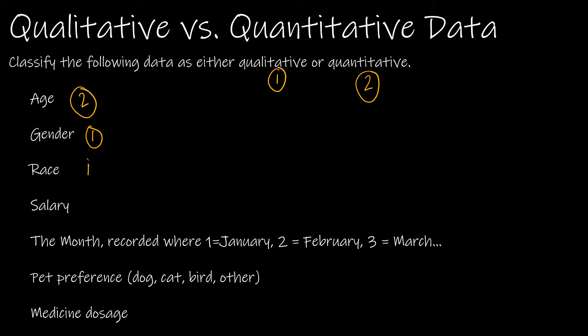Race is similarly qualitative — it's a category you belong to with no number involved. Salary is a number, and yes, it is a number that acts as a number — we would find value in finding the average, median, or mode of salary. Month recorded, where one is January, two is February, and so on — even though we're dealing with numbers, those numbers represent a category. We would not find value in finding statistics with those numbers, so this is qualitative.